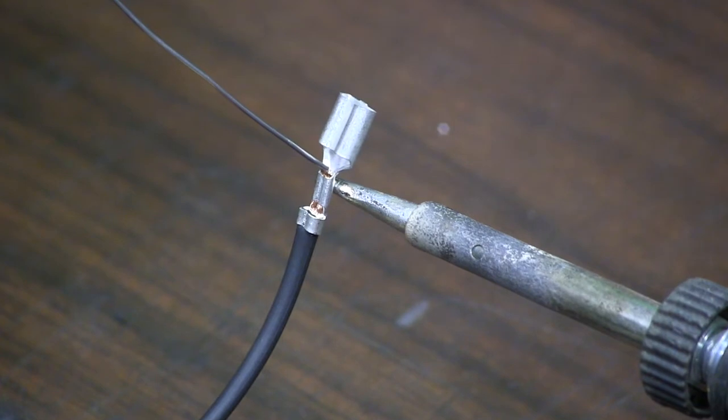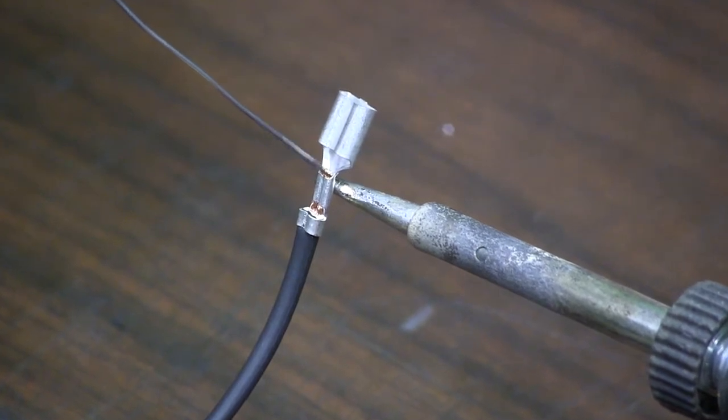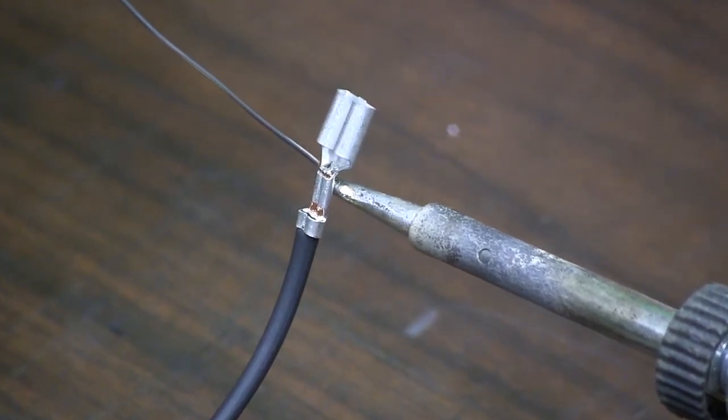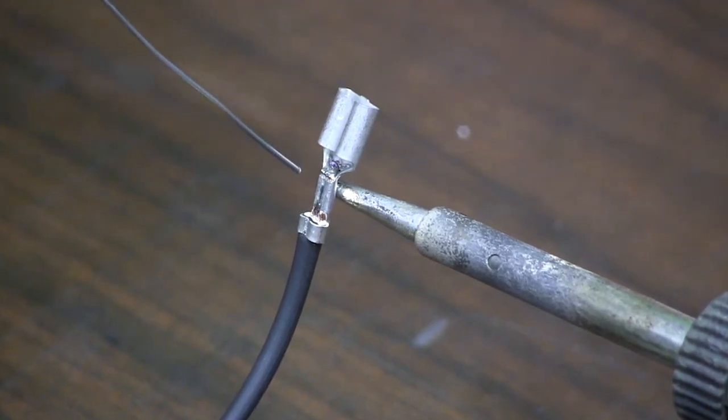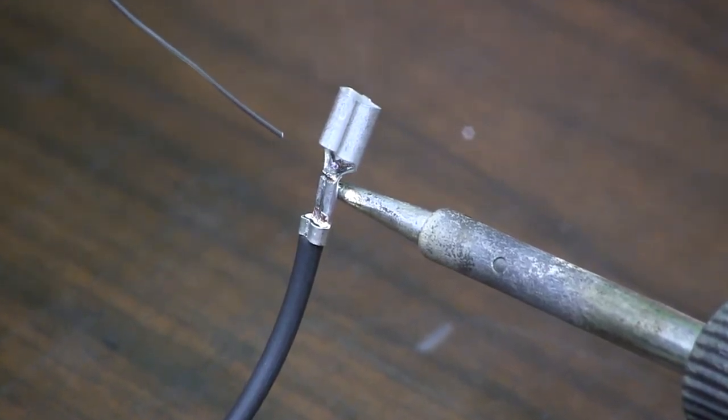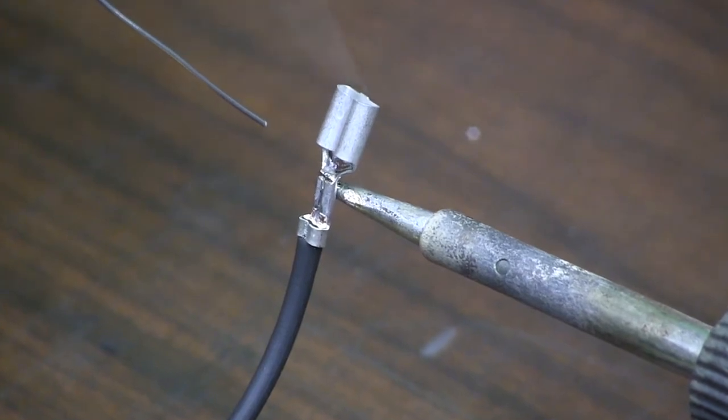You're going to want to let it heat up and apply solder right to the union of the wire and the terminal. Not too much, just a little bit. Let it work its way into the copper to form a nice strong bond.